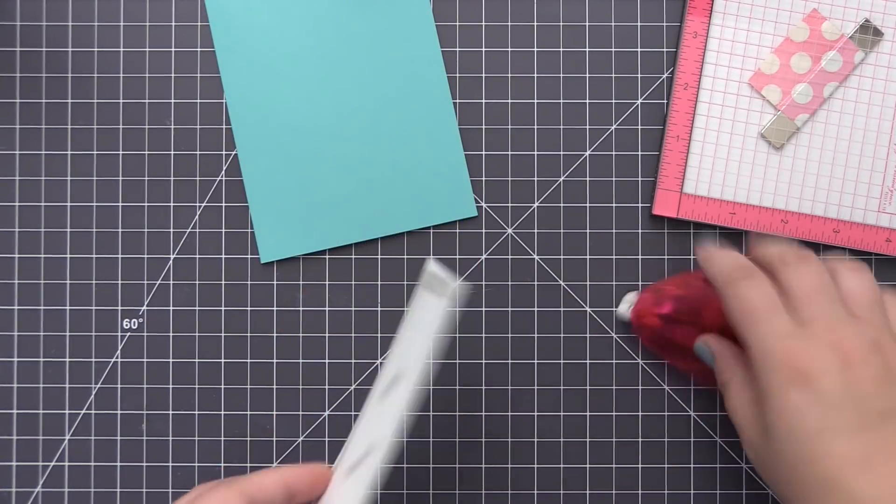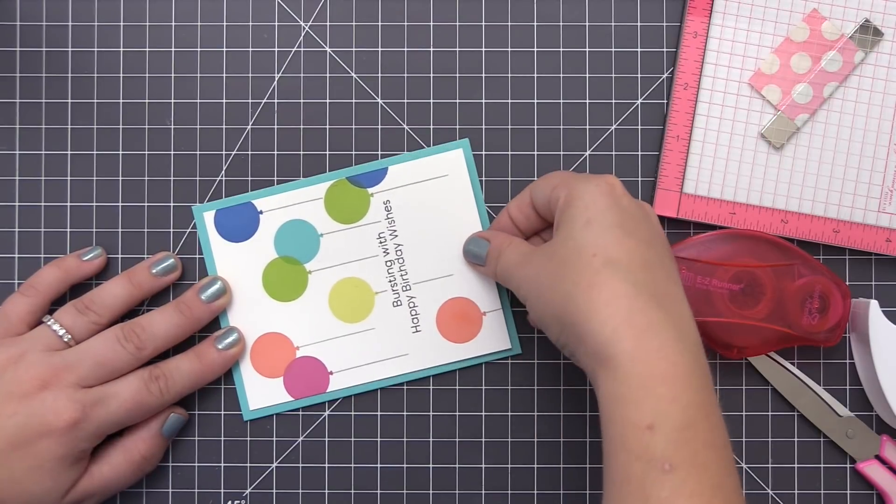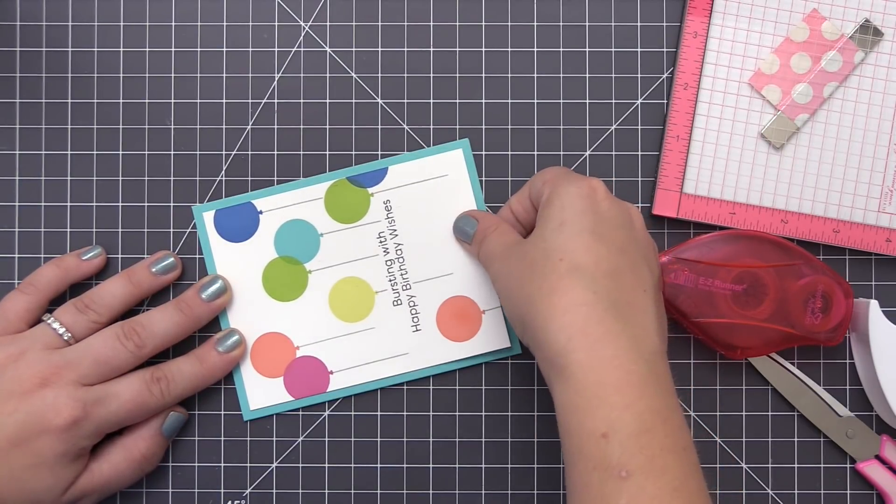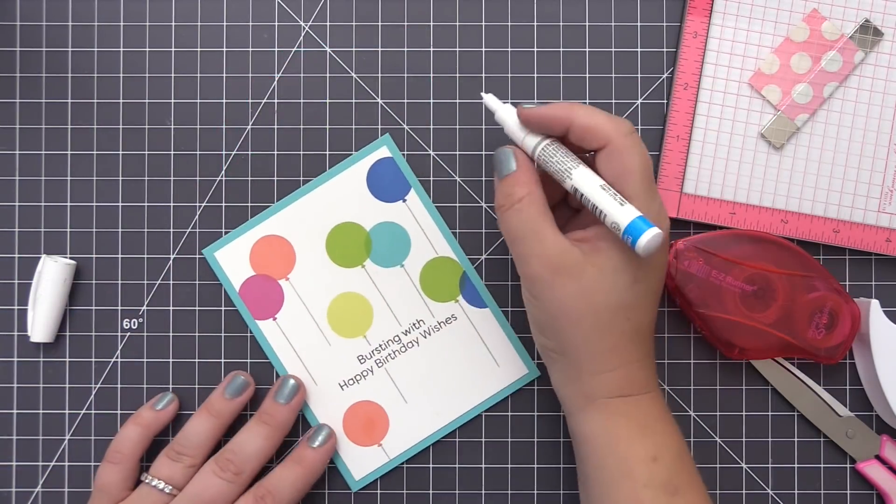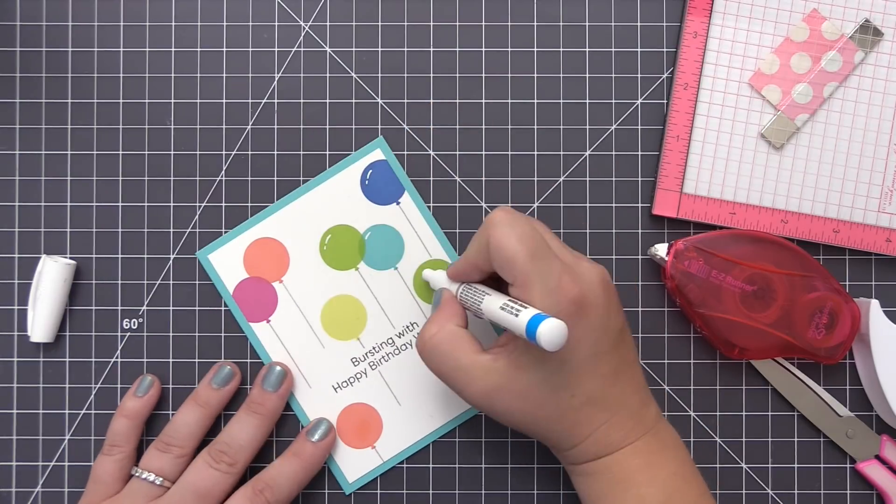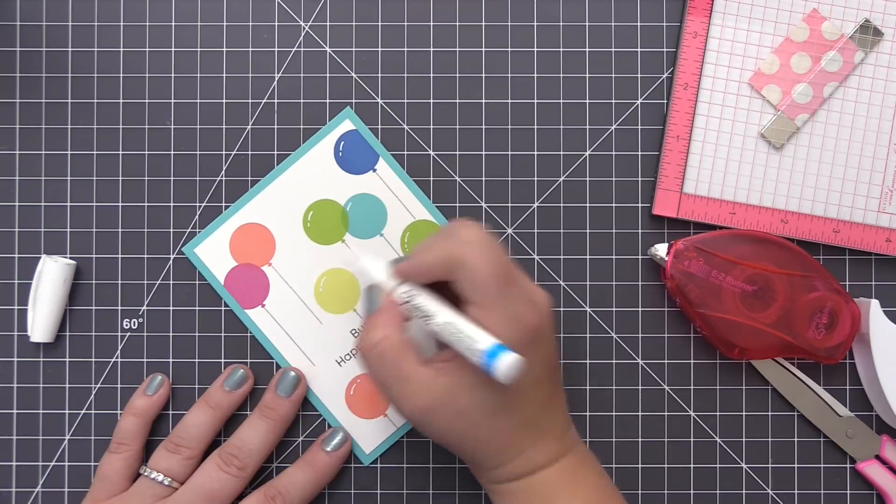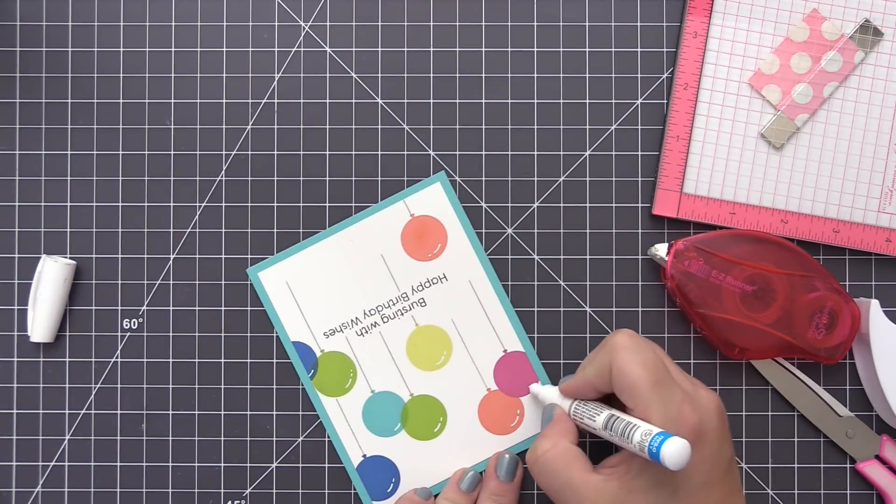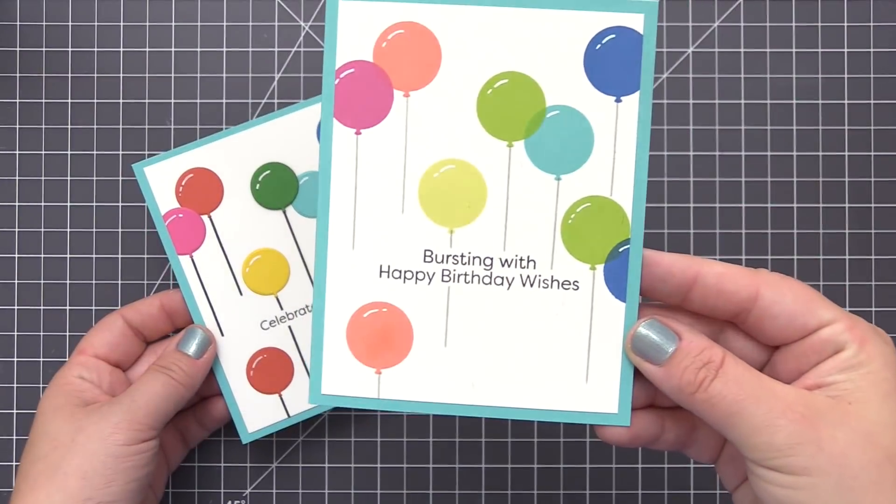I'm using regular adhesive to adhere the panel to my card base, and then I'm going to finish off the design by adding some highlight detail to each of the balloons. It just really adds a little bit of dimension to them and helps them not look so flat in one layer. You can use any white gel pen for this, and then what you're going to do is just kind of go around and add a little bit of a highlight onto each of the balloons. I'm keeping the highlight on the same side of the balloon since the light source will come from the same direction, and now you can see that finished card with all of that stamping.